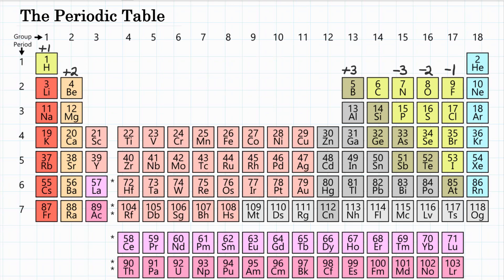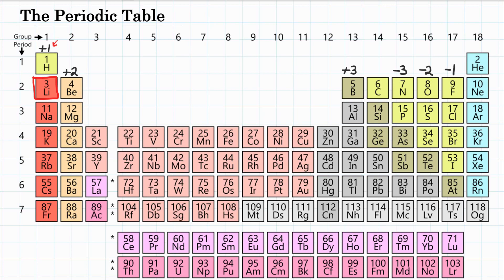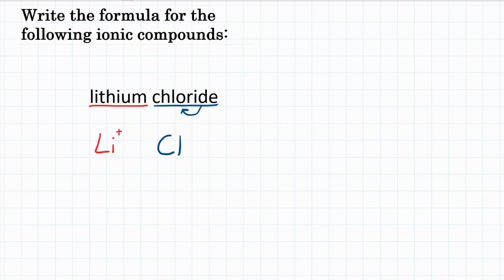Going to the periodic table, lithium is in the first column. All metals in the first column become positive one. Chlorine is in the column where all elements become negative one, so chlorine is negative one. Because they're both ones, we don't write the number — just the plus and minus signs.